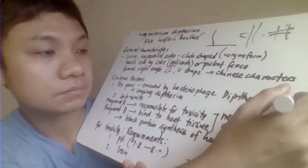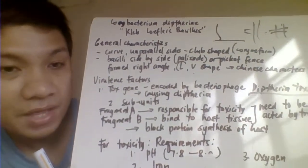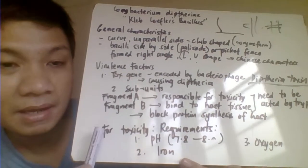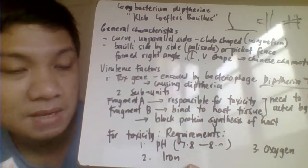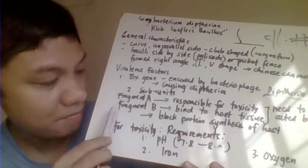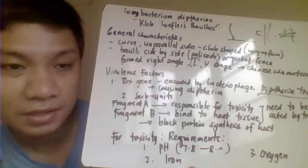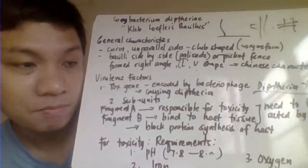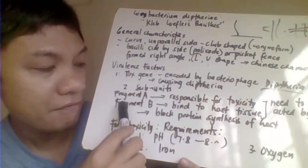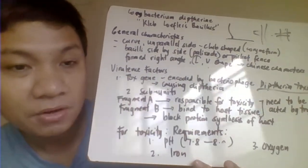The diphtheria toxin is made up of two subunits — Fragment A and Fragment B. Fragment A is the active one, responsible for the toxicity. Fragment B mediates entry and binds to the host epithelial cells, allowing attachment of the entire toxin to host tissues. The most active fragment responsible for the cytotoxic effect is Fragment A. To become active, the toxin must first be acted upon by trypsin — called trypsinization.